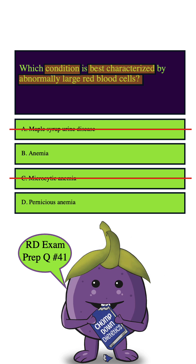Pernicious anemia is actually a type of macrocytic anemia, which is characterized by large red blood cells. Comparing B and D, the question asks for the condition that is best characterized, and 'best' typically means most specific. Anemia is general; pernicious anemia is specific. Therefore, we can eliminate answer B, leaving us with D, pernicious anemia — and that is indeed the correct answer.